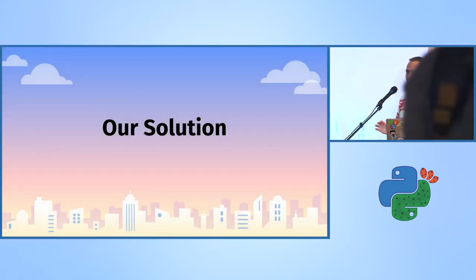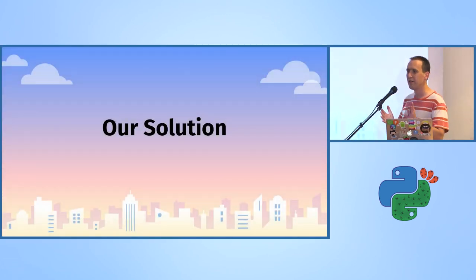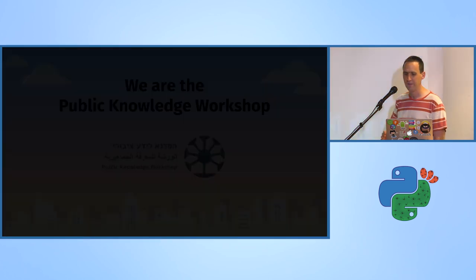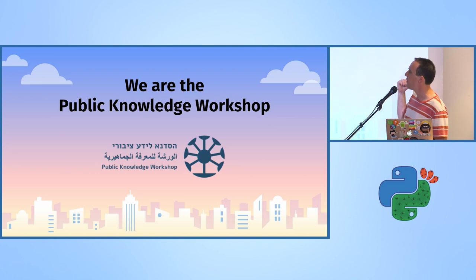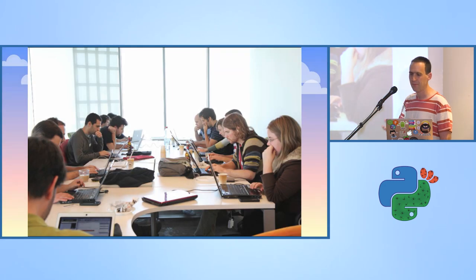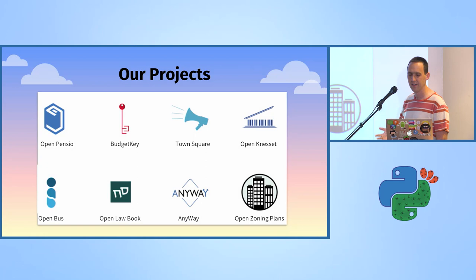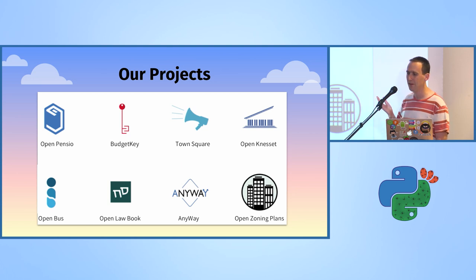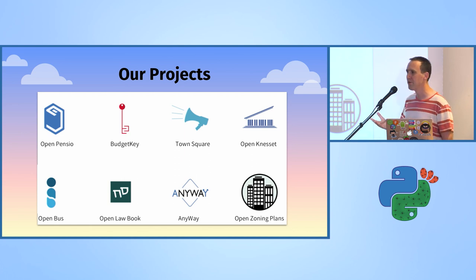This is a Python talk, so I'll get to the Python part. But first, who is 'we'? We want to solve the problem we saw earlier. We are the Public Knowledge Workshop, an NGO — some of you might have heard of us. We've been working about ten years now making government data more accessible, understandable, and open. We're volunteer-based with lots of different projects about the national budget, pensions, laws, car accidents, and public transportation.